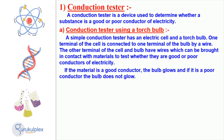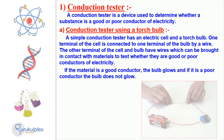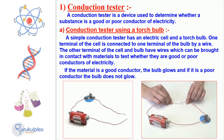Electric current can have both powerful and subtle effects on chemical systems. This slide is about two types of conduction testers used to assess the material's capacity to conduct electricity. A conduction tester with a torch bulb is made up of an electric cell and a torch bulb, where one terminal of each is connected by means of a wire.